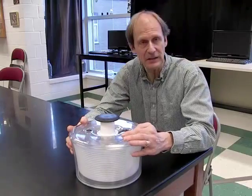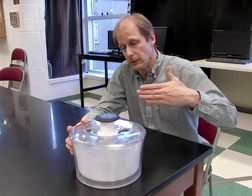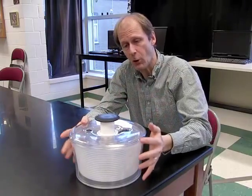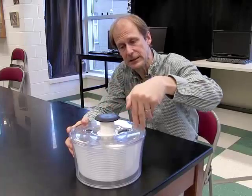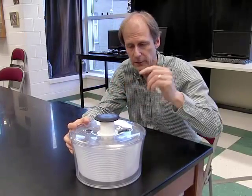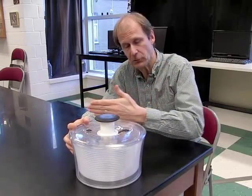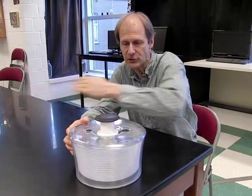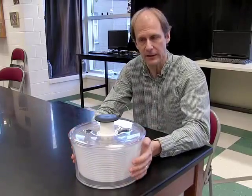As the basket spins really fast, the centripetal force, the basket walls are providing centripetal force to keep the lettuce going in a circle. But the water droplets can go through the holes in the sides. The water droplets continue in the tangential direction and come out of the basket into the larger container.